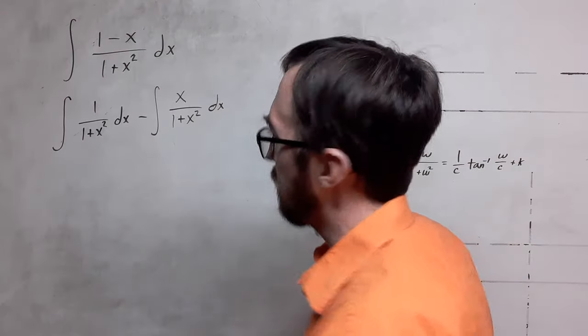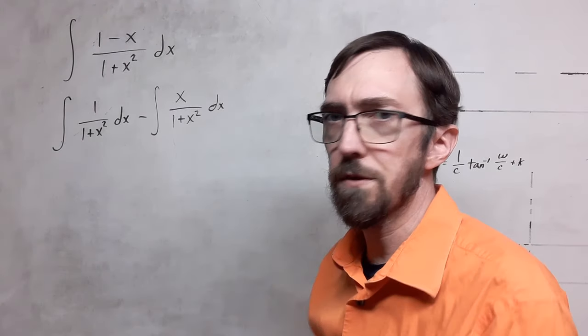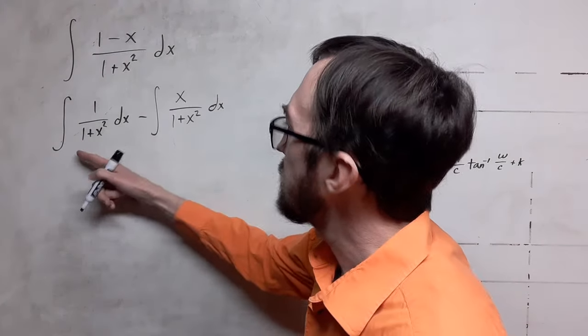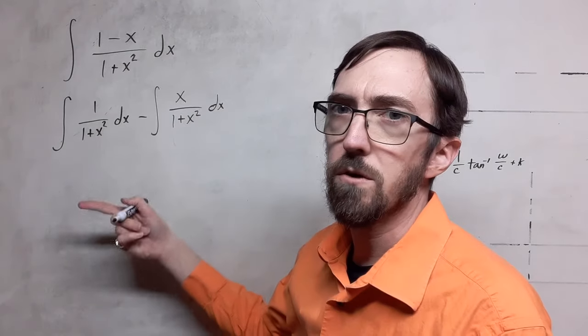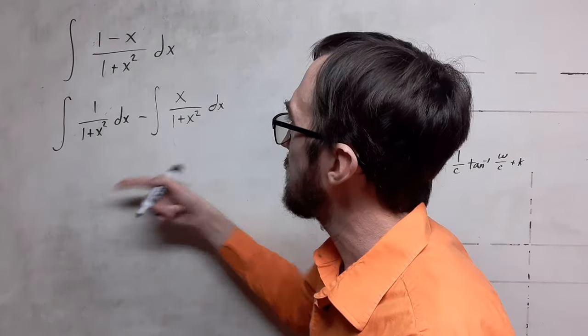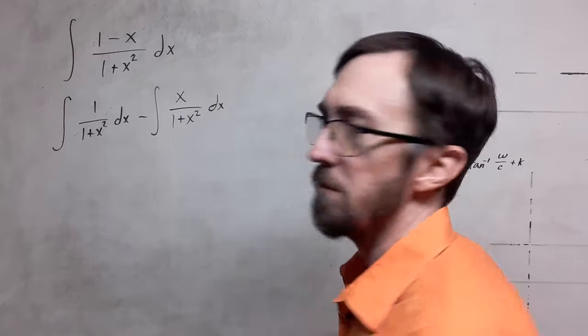Some of you may say, well, the 1's not squared, so how do we know that we're supposed to use that? Well, you can rewrite that as 1 squared. 1 squared is just 1, so it fits the form of the theorem.